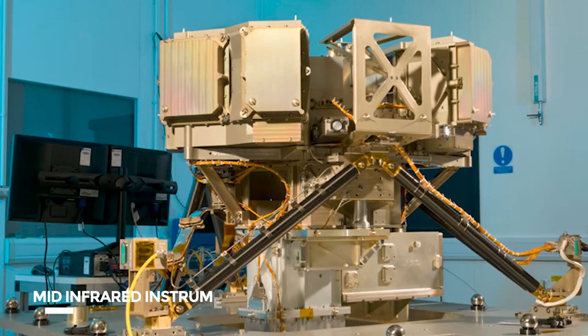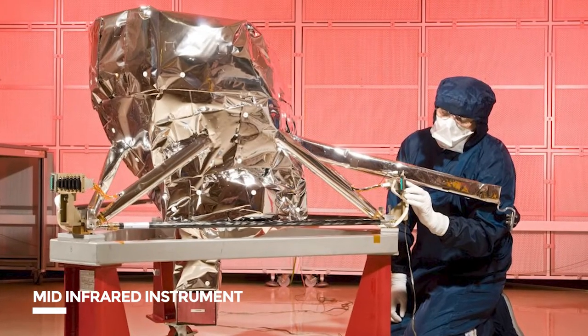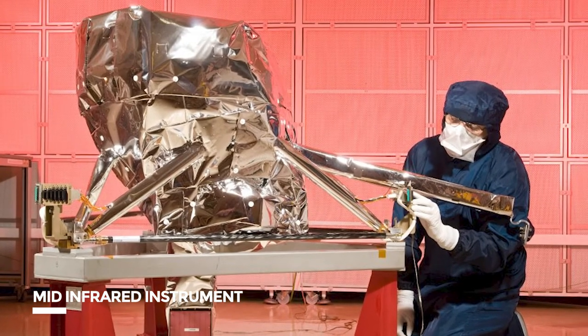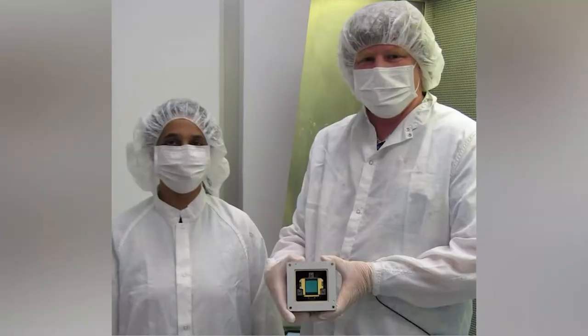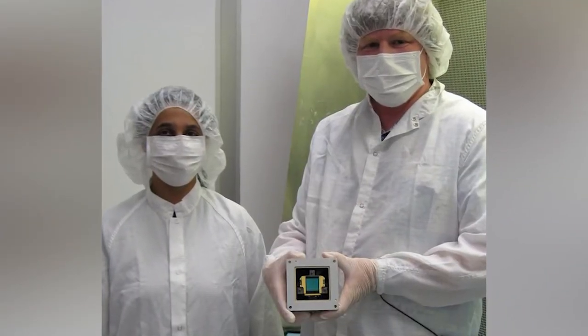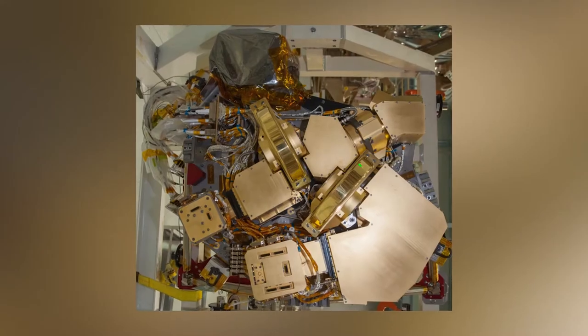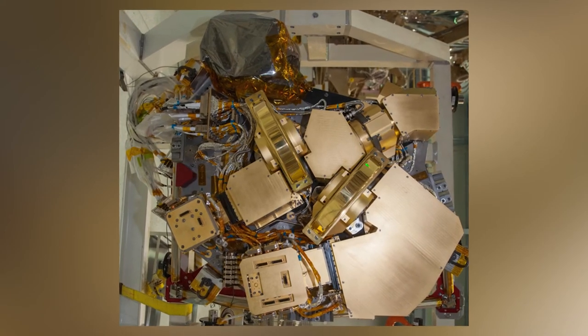Mid-infrared instrument or MIRI detects wavelengths in the mid-to-long infrared range of 5-27 microns. It has a mid-infrared camera as well as an imaging spectrometer. MIRI's detector is a thin layer of silicon sensitive to mid-infrared that's sandwiched between a layer of transparent silicon and metalized contacts.